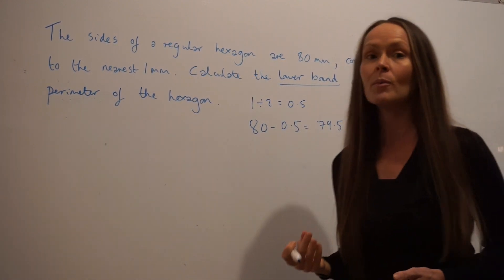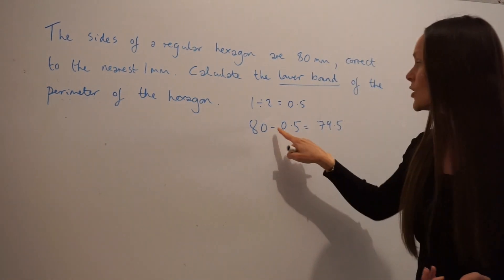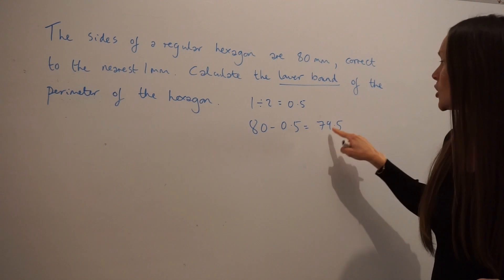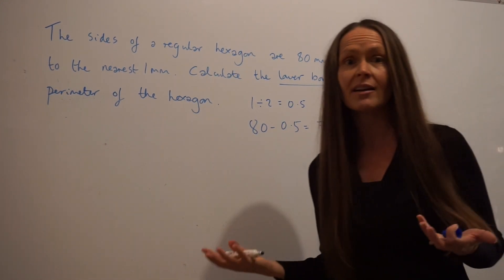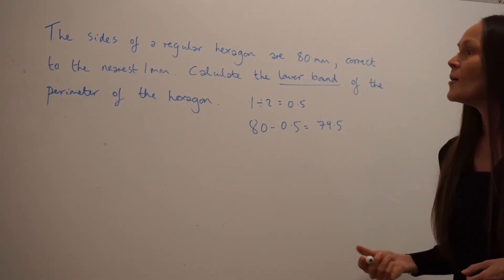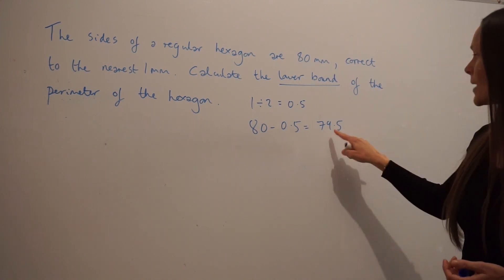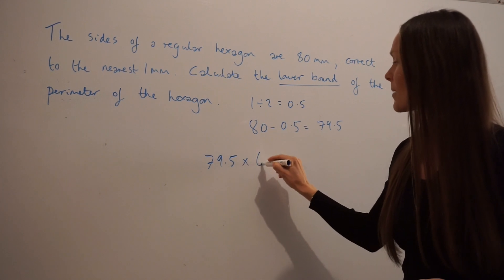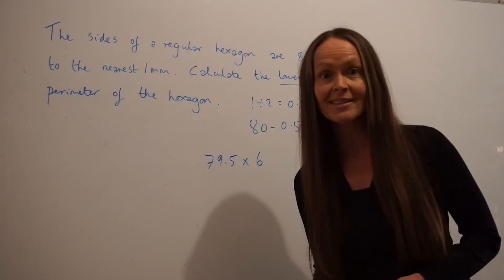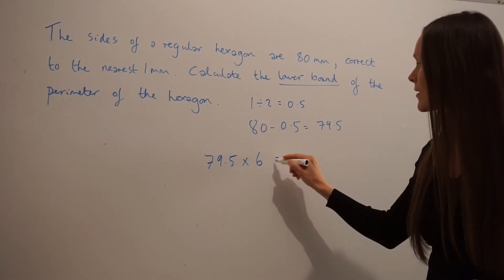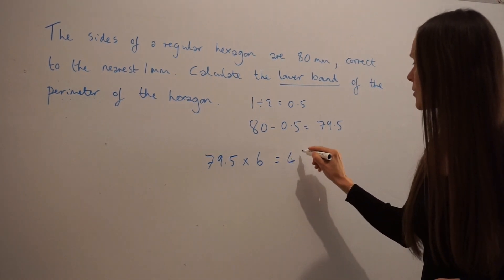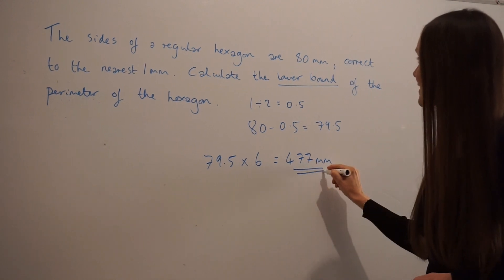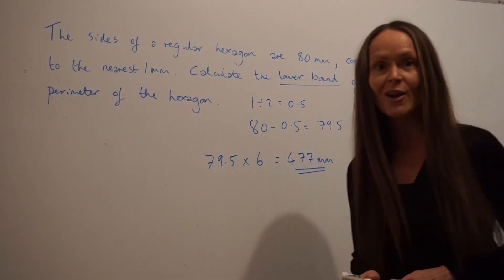If we had been working out the upper bound instead, you would have added instead of subtracted. Now that's the lower bound for one of the sides, one of the lengths in this hexagon. But to work out the perimeter, we have to take the length of one side and multiply by 6, because in a hexagon there are 6 sides altogether. Which gives us a total of 477 millimetres, which is the lower bound of the perimeter of the hexagon.